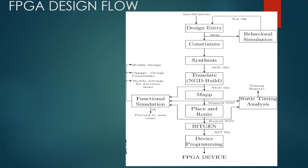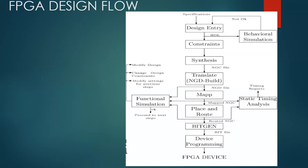Constraints are nothing but a set of rules, or you can say a set of instructions given by the user to the tool — things to be followed. We have different constraints: timing constraints, area constraints, and all. After constraints, the next step is synthesis. Synthesis is the process in which your circuit is generated — the code is converted into a circuit. For example, if you write an AND gate code, that code will be converted into an actual AND gate circuit, and it will be saved in the NGC file.